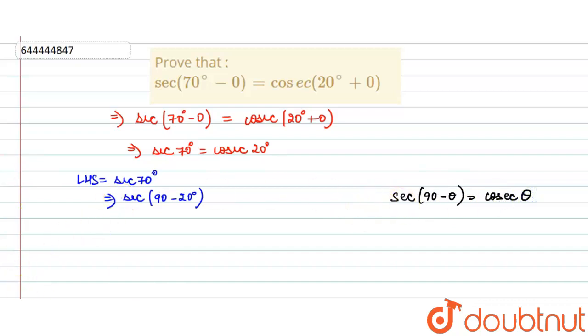Using this identity, here 90 is constant and theta is 20, so we can write this as cosec of 20 degrees, and it equals our right hand side.